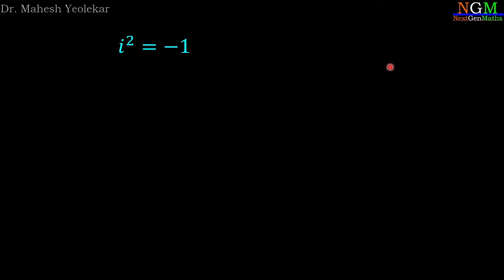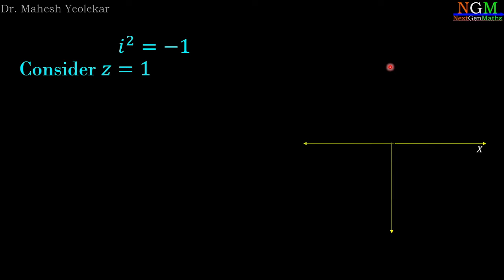To understand the geometrical meaning of complex number i, we consider the complex number z = 1 and plot it on the complex plane, which lies on the x-axis.